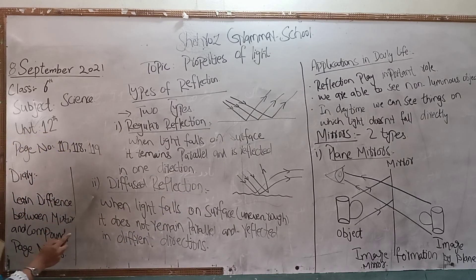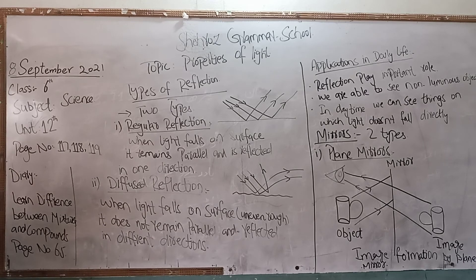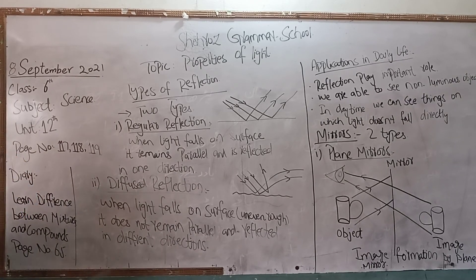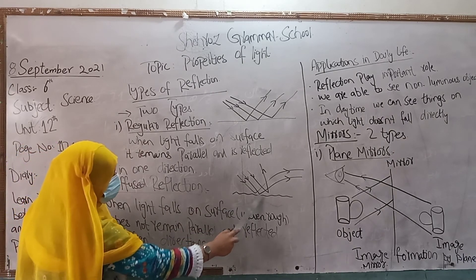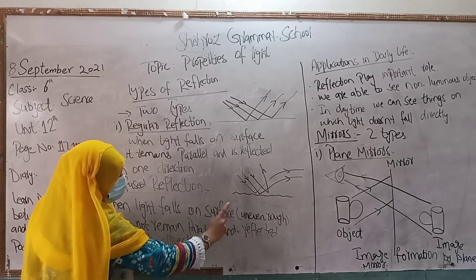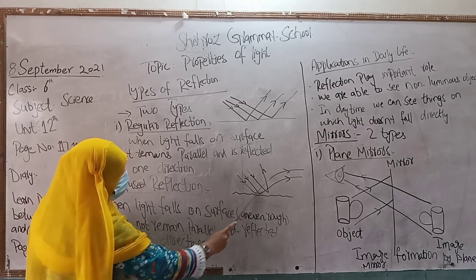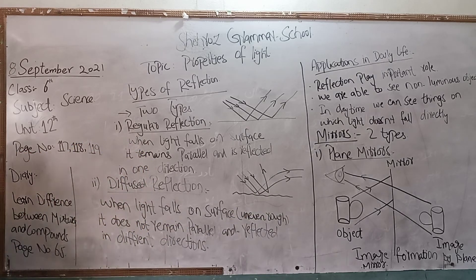The next one is diffuse reflection. In diffuse reflection, light falls on a surface but the reflected rays scatter in different directions. You can see the reflection from different directions, not just from one specific direction.